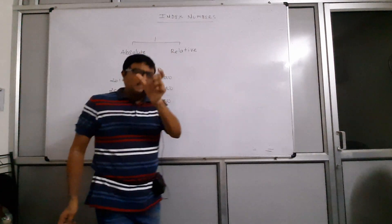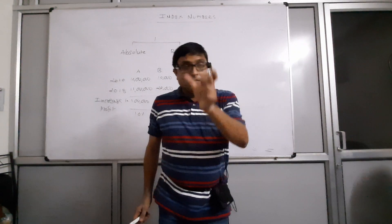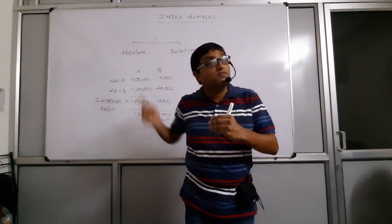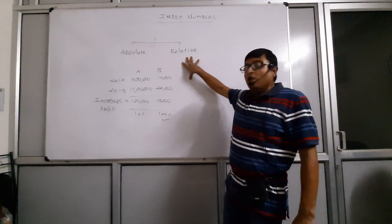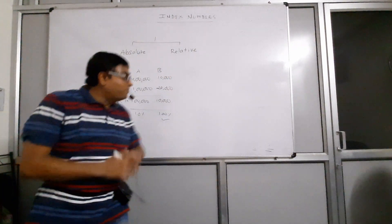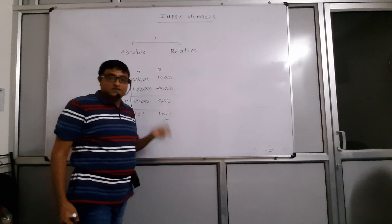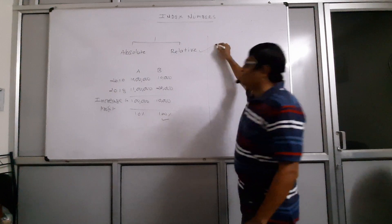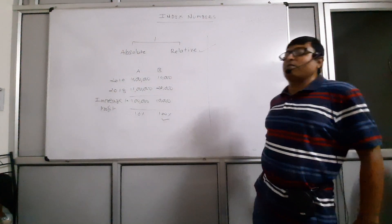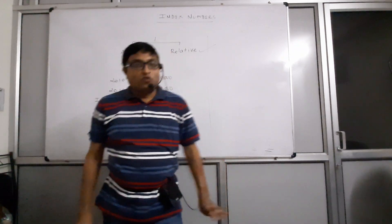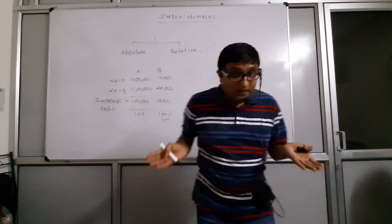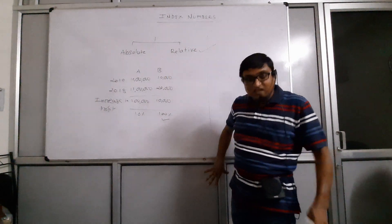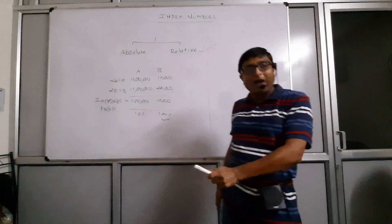If you consider only the exact amount of change, it is absolute change. But if you consider change in reference to the base point or base value, that is called relative change. Relative changes are always preferred compared to absolute changes, and index number is a measure of relative changes — on an average basis.